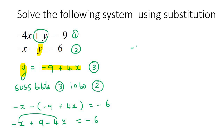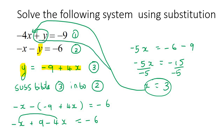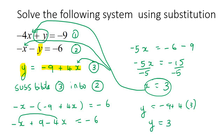Simplifying gives negative 5X, then taking 9 over to the other side makes it negative, so negative 5X equals negative 15. Dividing both sides by negative 5, X is equal to 3. Now we need Y. As always, I'll use equation three because it's fastest — Y equals negative 9 plus 4 times 3. So Y is equal to 3. Our final answer is X is 3 and Y is 3.